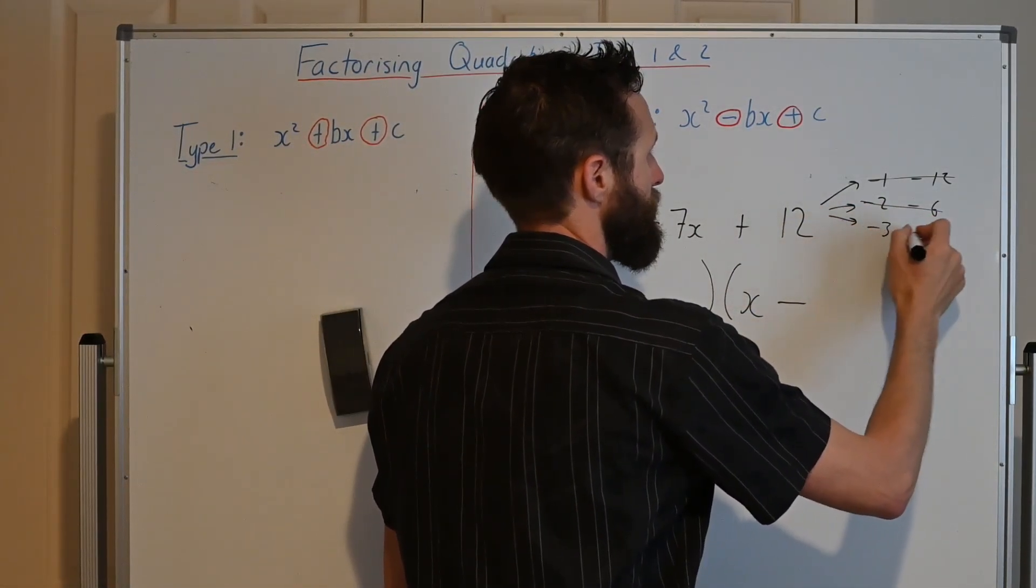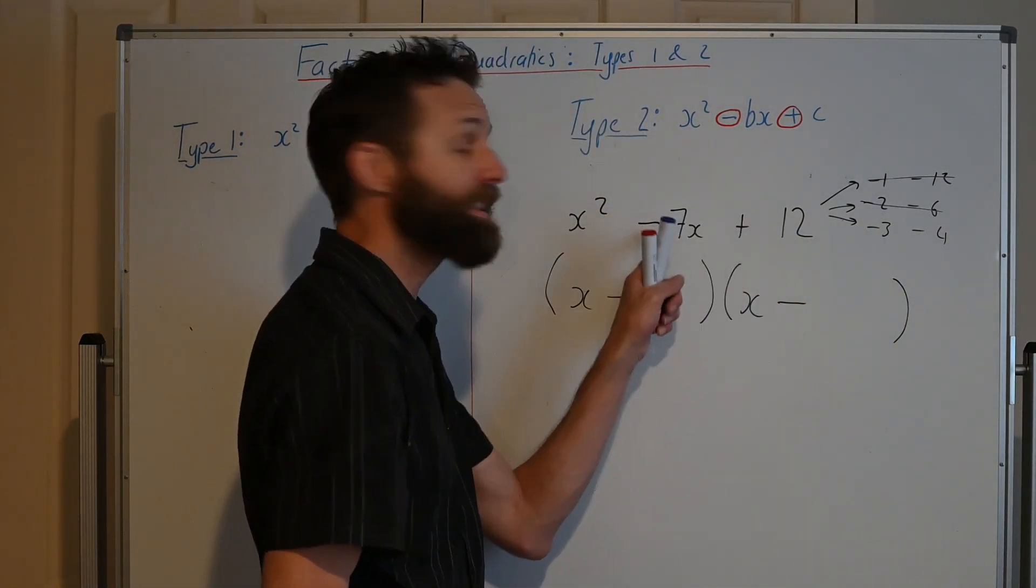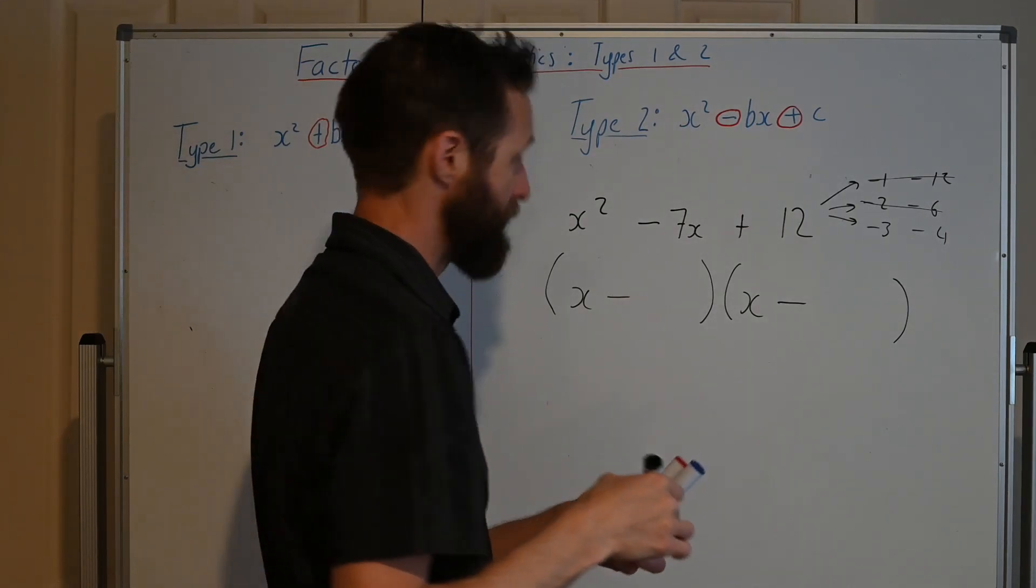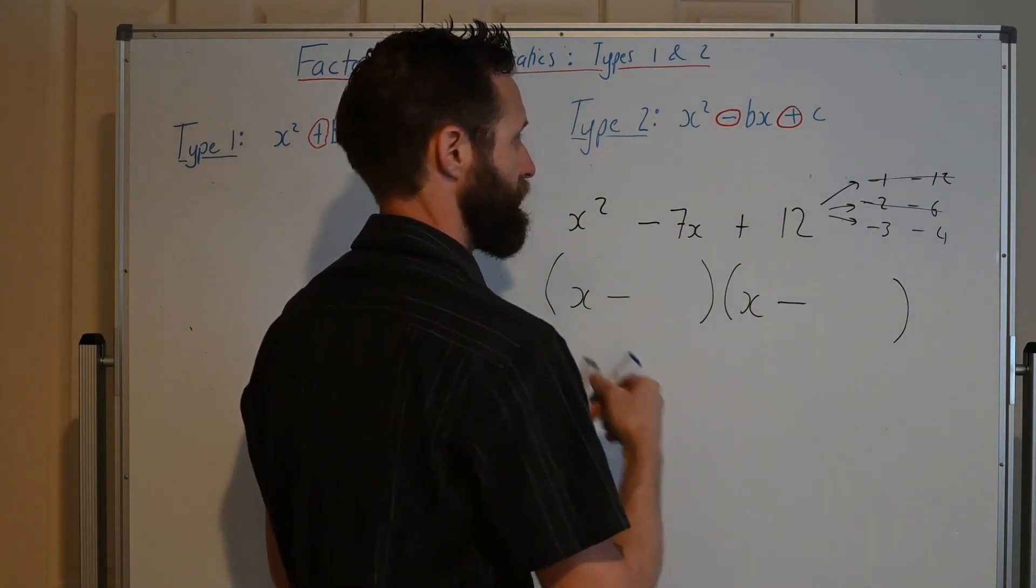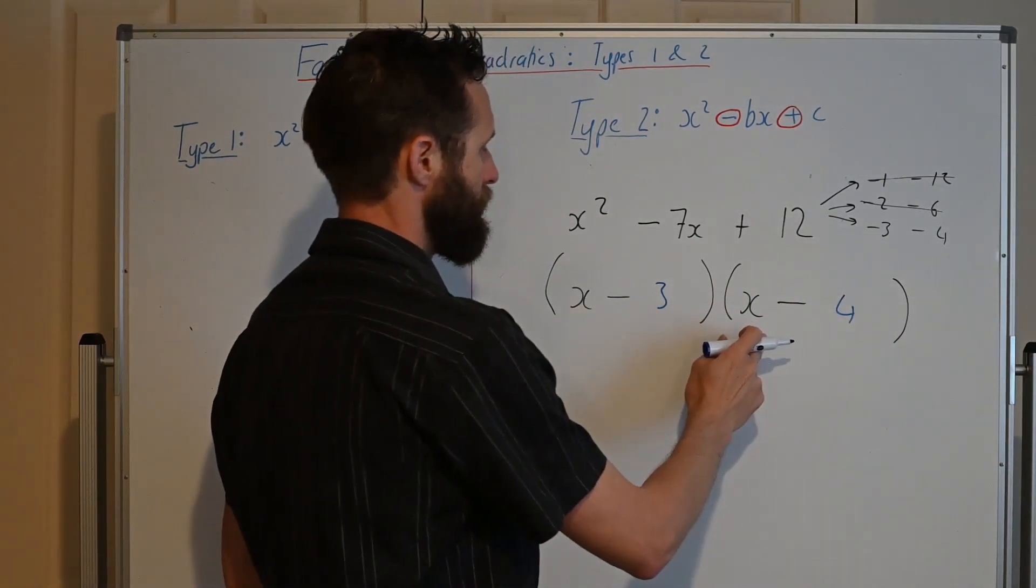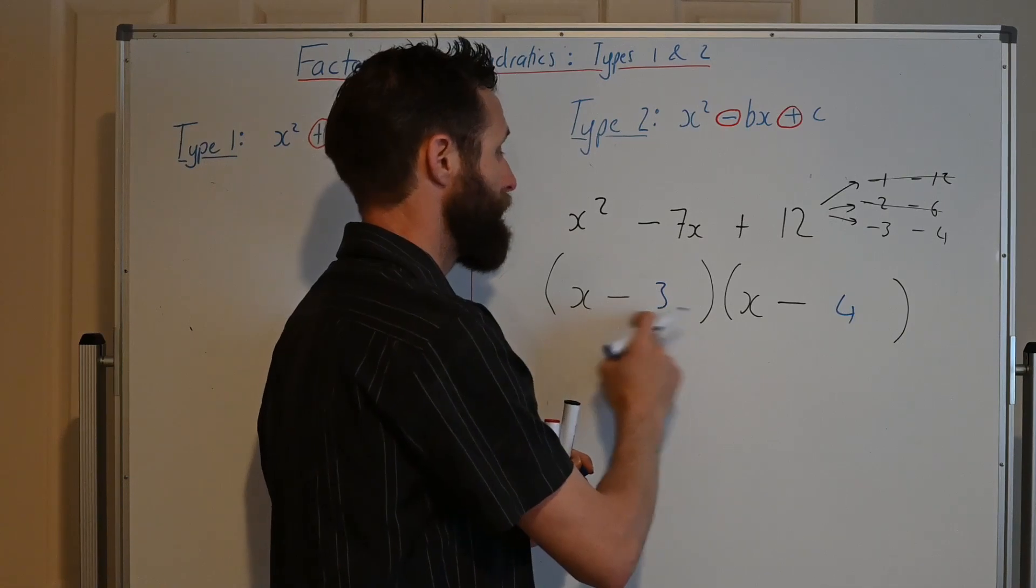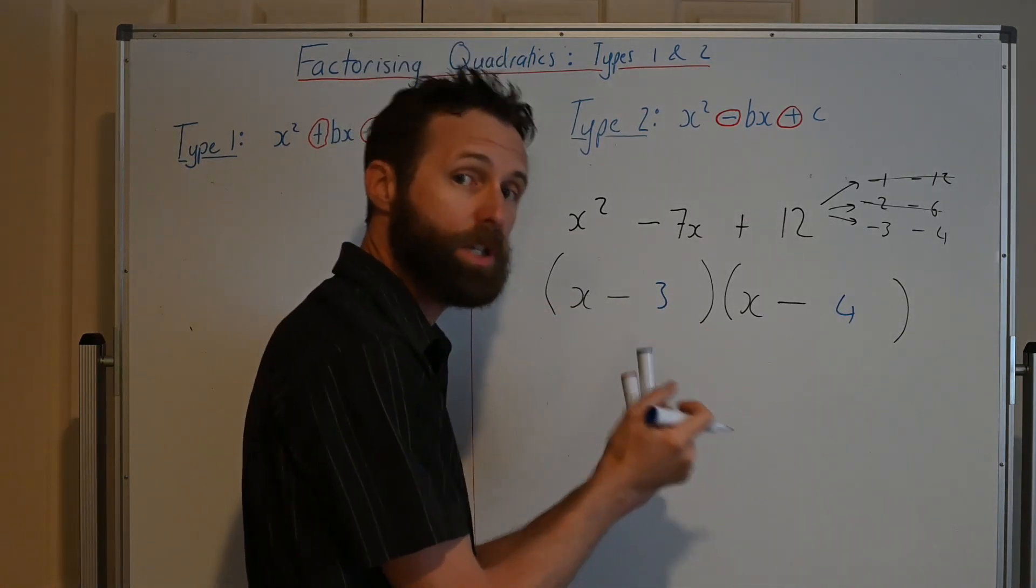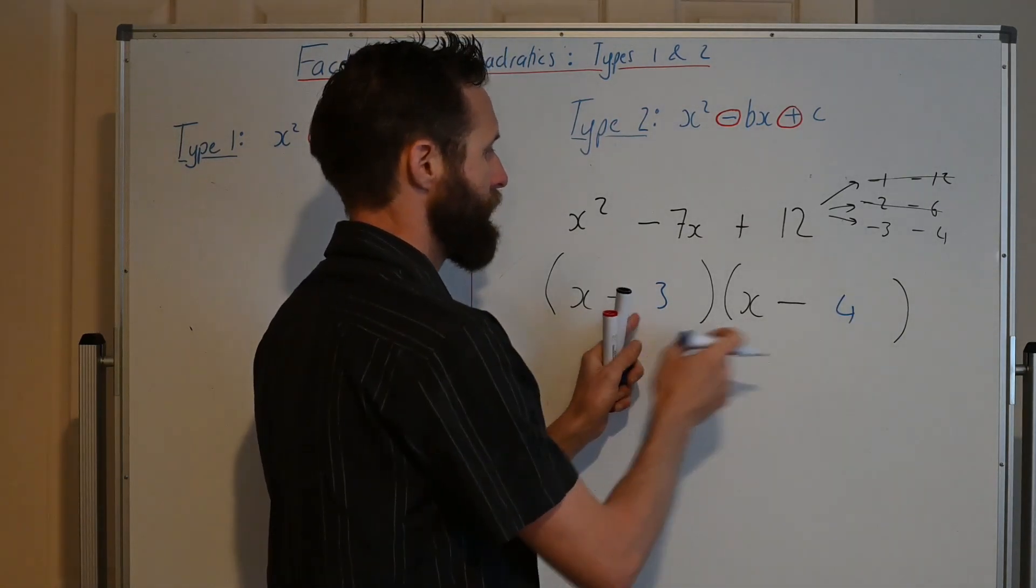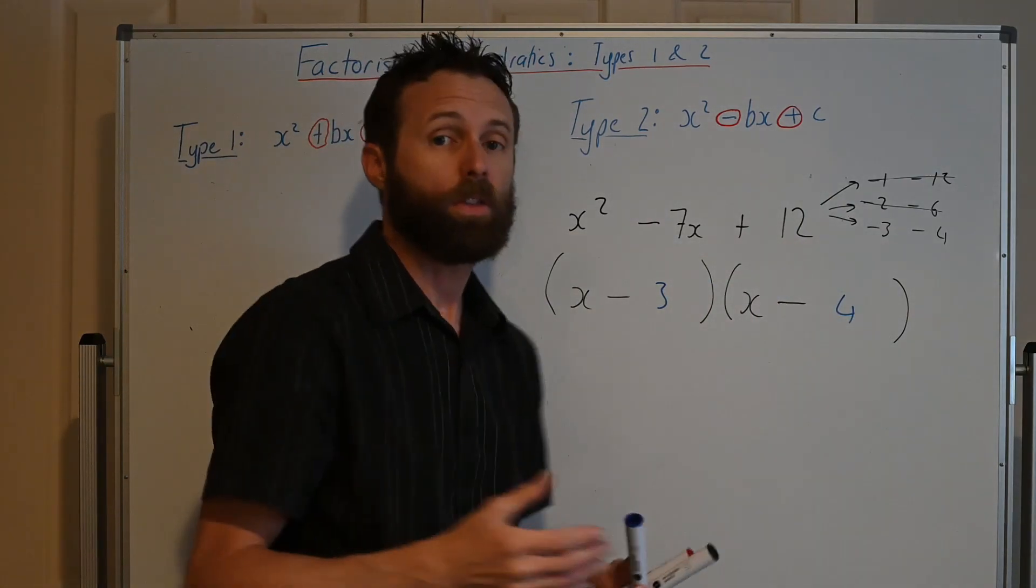What about minus 3 times minus 4? That multiplies to make positive 12, and it adds to make negative 7, so that will be our factors that we need. x squared out is, x times minus 4 is minus 4x, and is minus 3 times x is minus 3x. Add them together you get minus 7x. Minus 3 times minus 4 is 12, a positive 12. So there you have it.